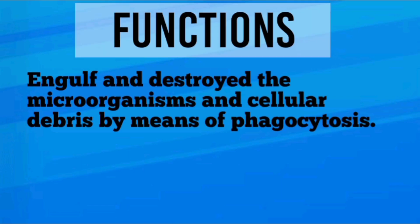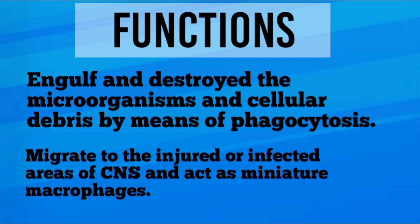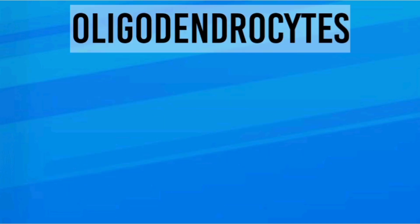Functions of microglia: They engulf and destroy microorganisms and cellular debris by means of phagocytosis, and migrate to the injured or infected area of the CNS, acting as miniature macrophages.